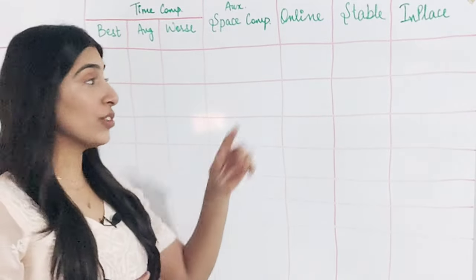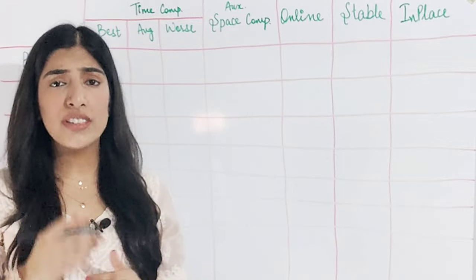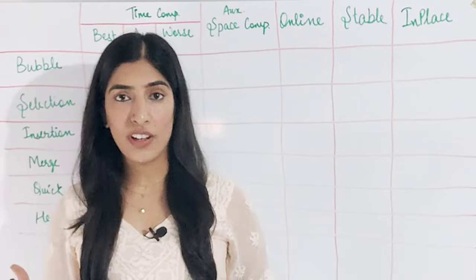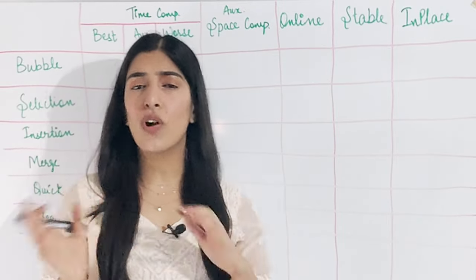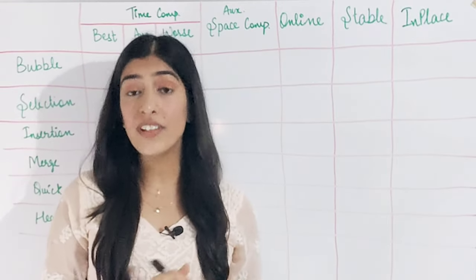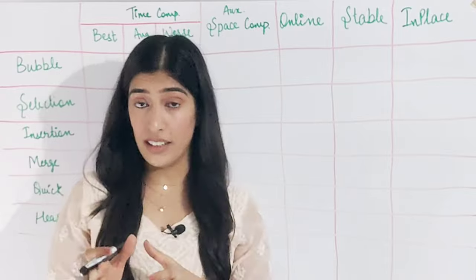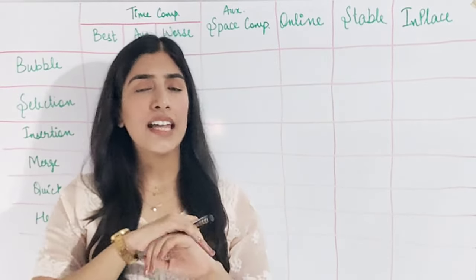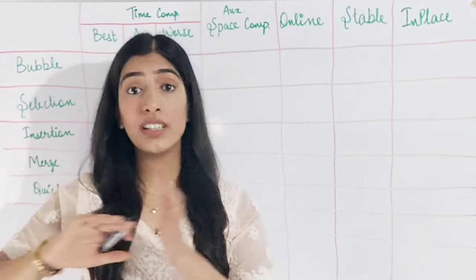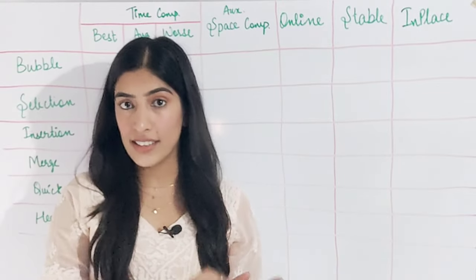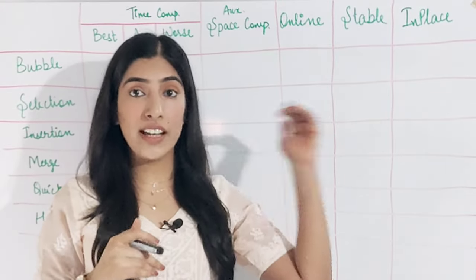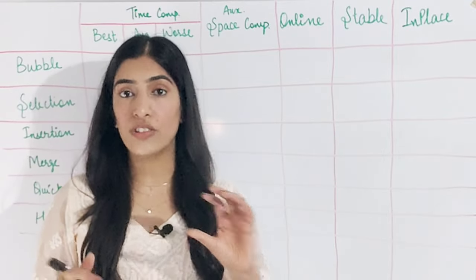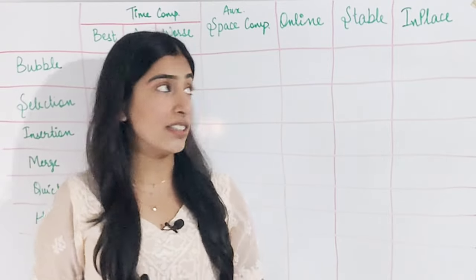The next property we are going to compare is whether the algorithm is online. If an algorithm is online, it means we don't have to give all the input data beforehand. That means if an algorithm is running and in between we give more input data, it is completely fine — the algorithm will continue as it is and will not get disturbed. In an online algorithm, you can keep giving data and it will continue the sorting as is.